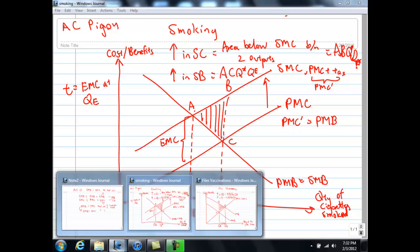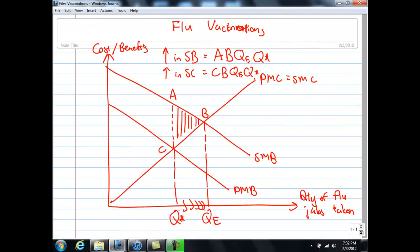In the same way, let's consider the case of positive externality with regards to flu vaccination. So in this case, instead of using a tax, we will be using a subsidy. So just like what you have done for the tax,